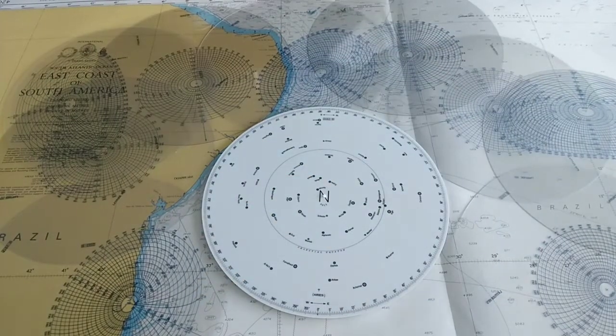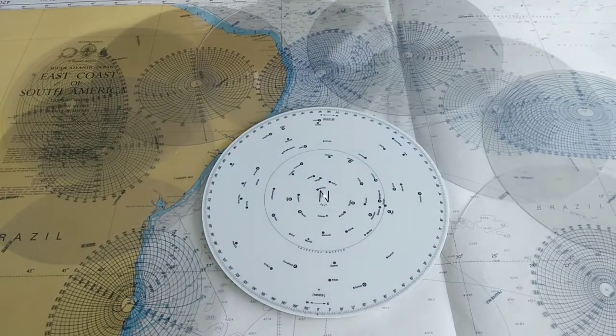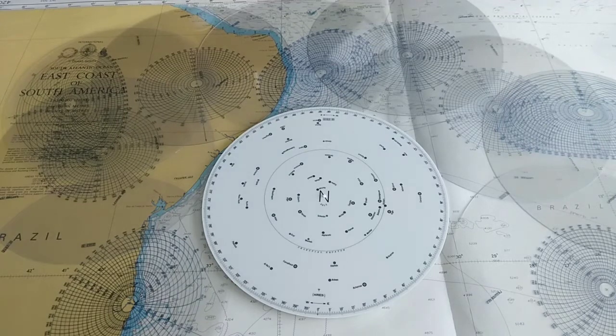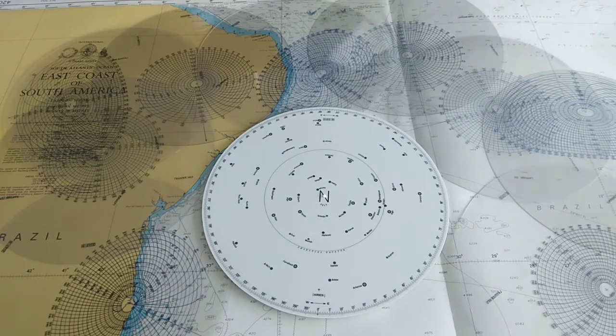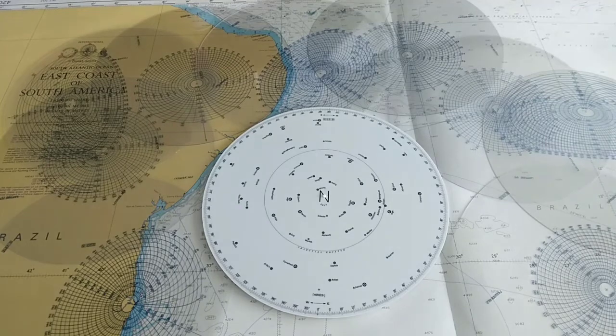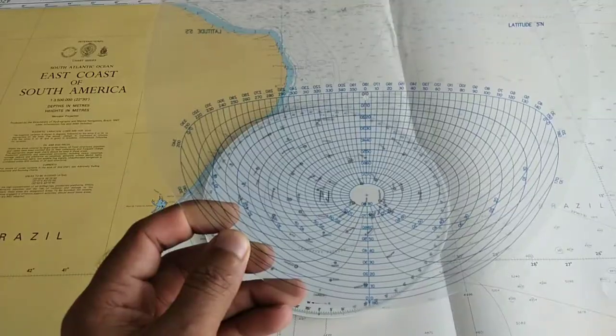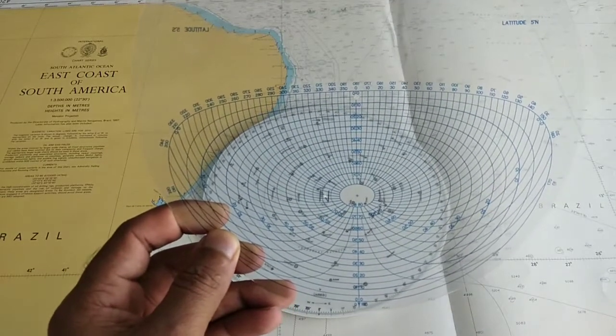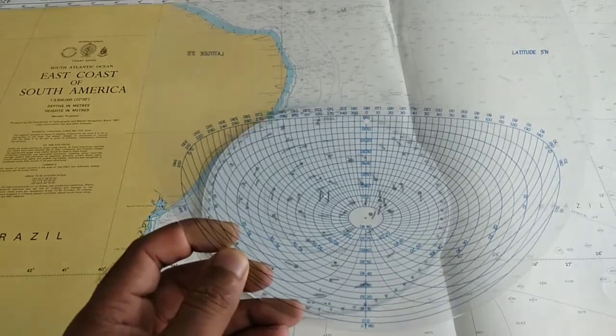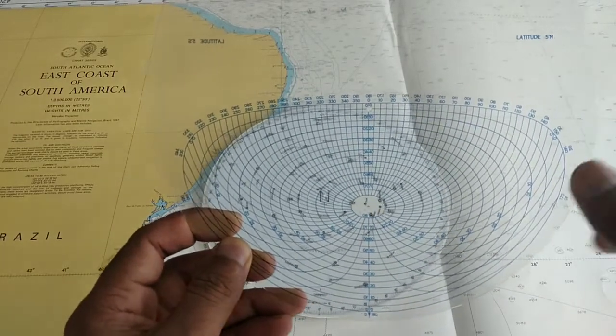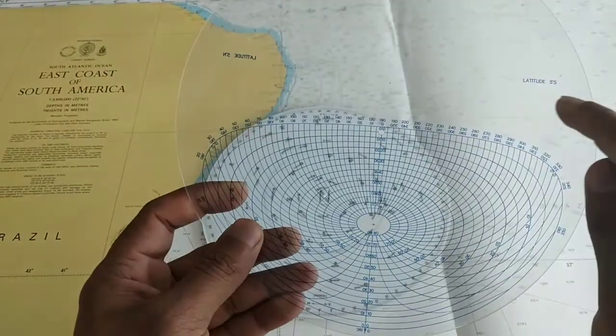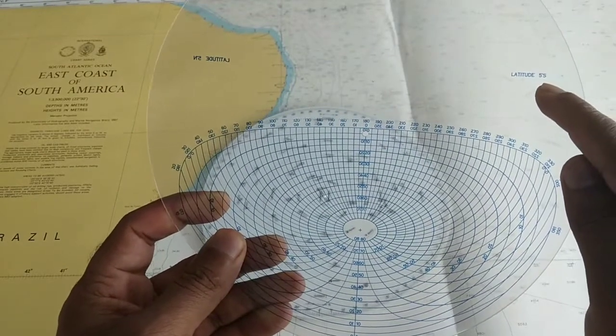The templates are designed with latitude in mind. You have to choose the correct template to find the star. Each template has two sides: one is for northern latitude, you should turn the other side to find the stars on the southern latitude.